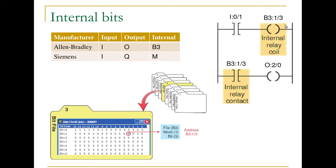Here we have an Allen Bradley example where some internal memory is getting set, and then we're examining that bit before we turn on the output — or before we set the output bit — which eventually gets mapped to a physical output.